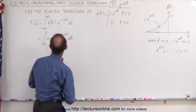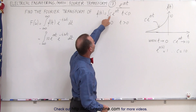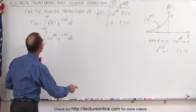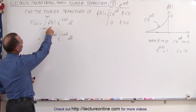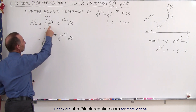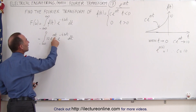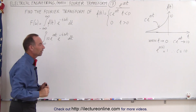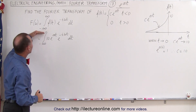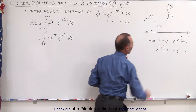That means the function we're going to find the transform for is really 10e to the at. So when we plug that into our general equation and find the Fourier transform of an input function, that input function now will be 10e to the at. We're going to integrate from minus infinity to zero, because after that the function is equal to zero.